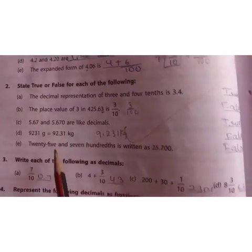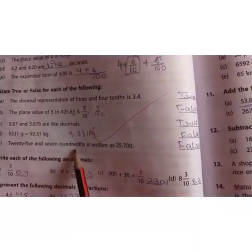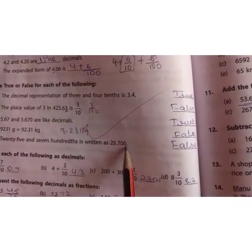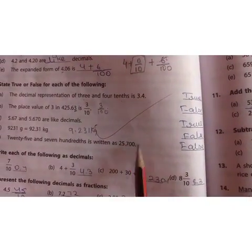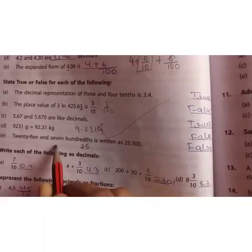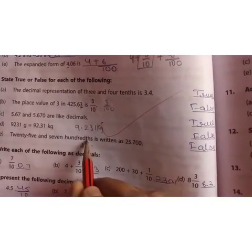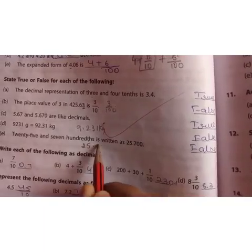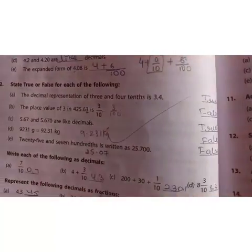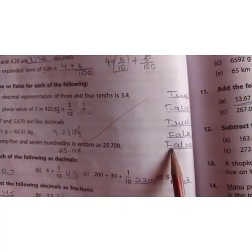Next we have 25 and 7 hundredth is written as 25.700. Again this is false because 25.700 means it is decimal point, as it is in 100th place. So 10th place will be 0 and in 100th place it will be 7. So 25.07. So the answer is wrong. So write false.